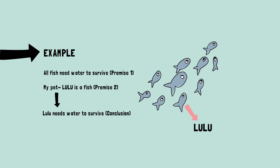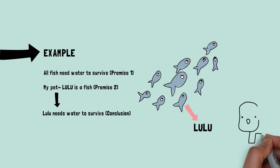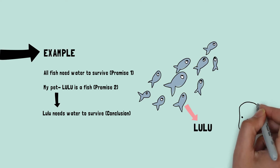There are two things which can help you recognize deductive reasoning. An important characteristic is that the conclusion is 100% certain. If we find that the conclusion is incorrect, then we need to revisit the premises and figure out which one is false. If Lulu does not need water to survive, maybe Lulu is not a fish?